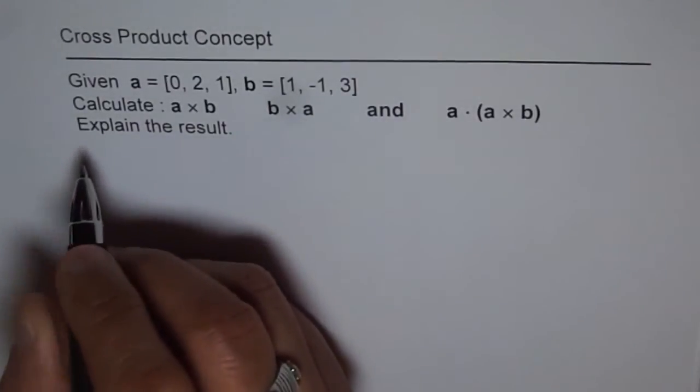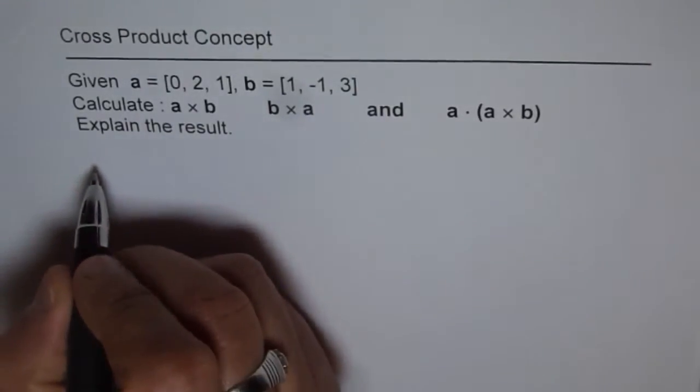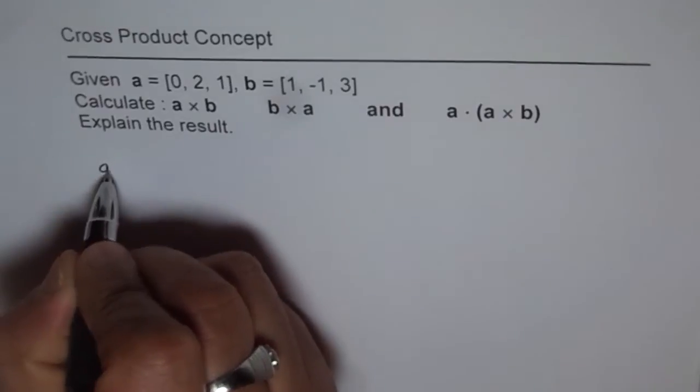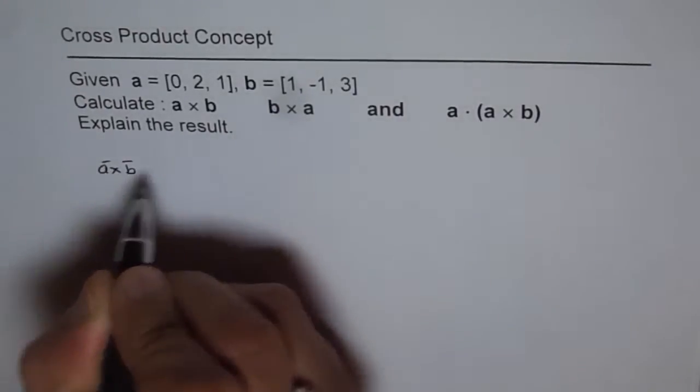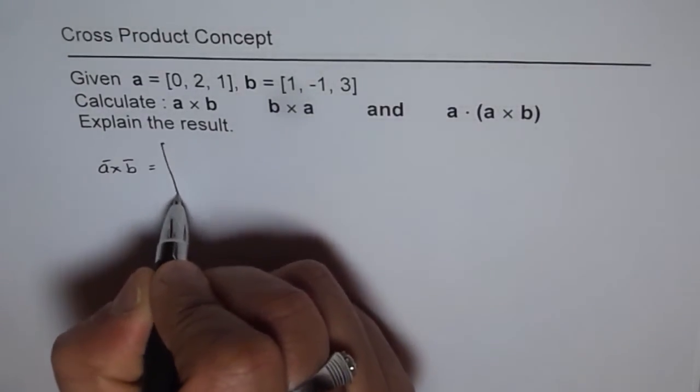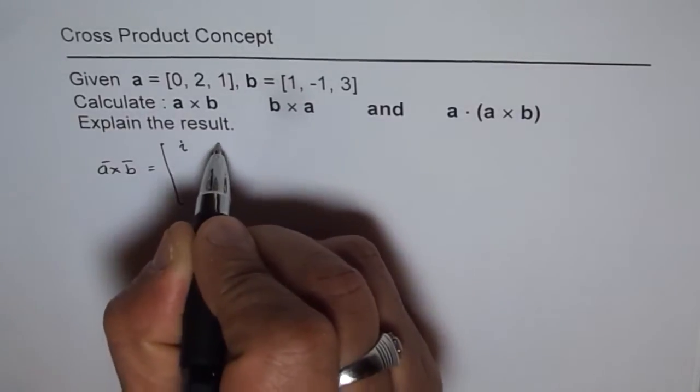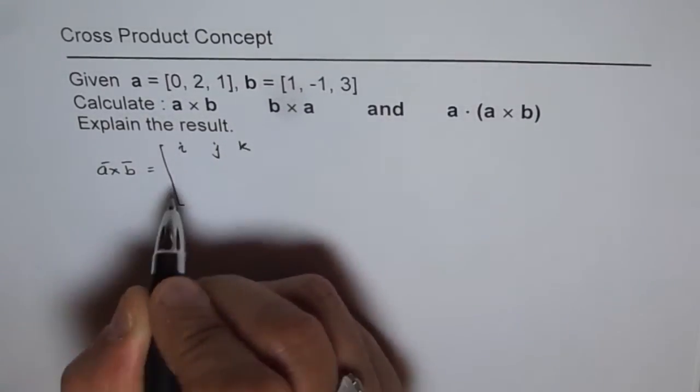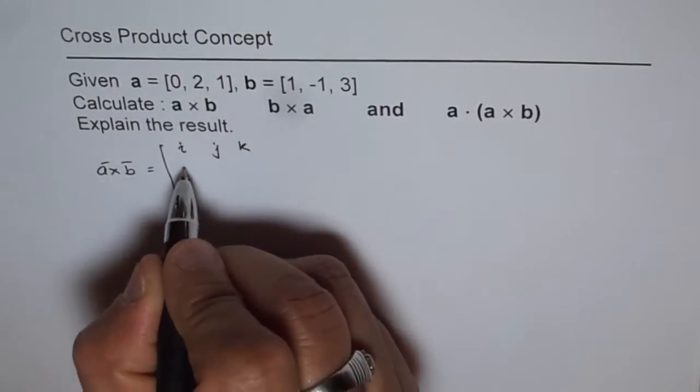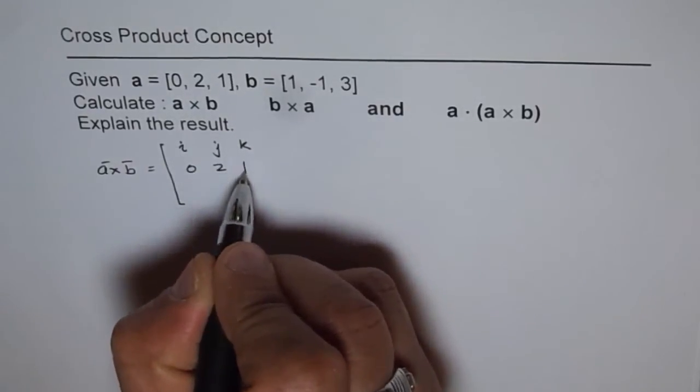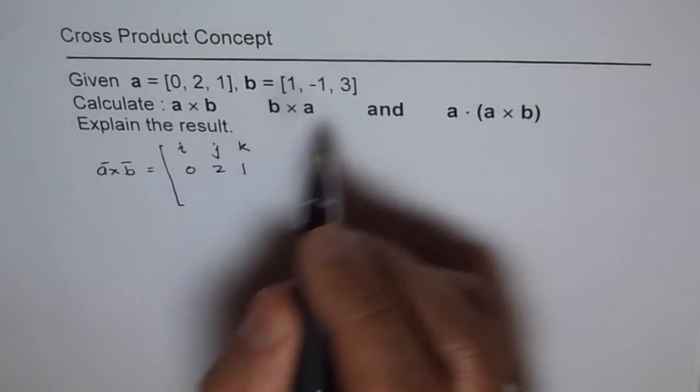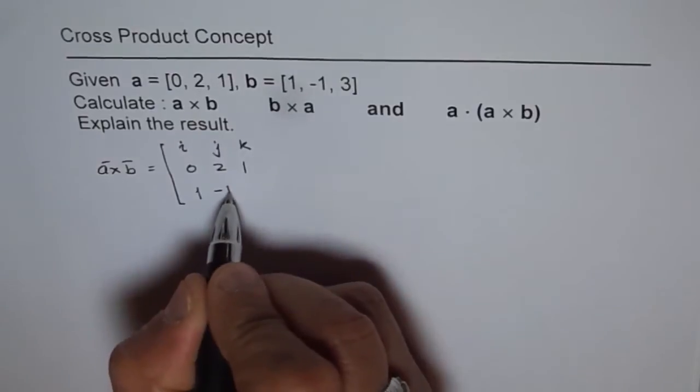I will use the matrix way of calculating A cross B. When we say A cross B, we can write this as a matrix I, J, K and I will write vector A first which is 0, 2, 1. We are doing A cross B and then vector B which is 1, -1, 3.